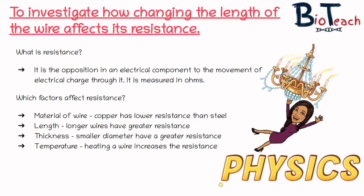In terms of this particular topic, what you need to know is first of all what resistance is and which factors affect resistance. We're really just looking at the opposition in an electrical component to the movement of electrical charge through it. Resistance is normally measured in ohms by using an ohmmeter, but we can also calculate it if we know the potential difference and the current going through the circuit.